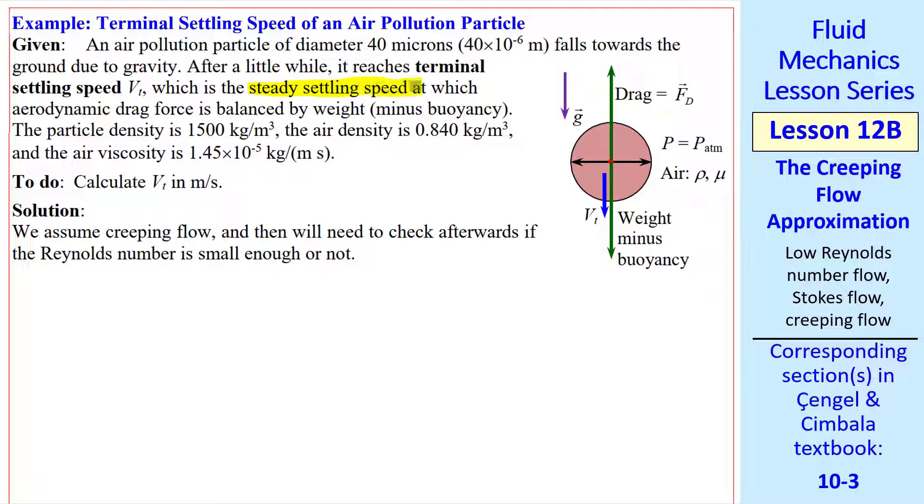The terminal settling speed is the steady settling speed at which aerodynamic drag force is balanced by weight, actually weight minus buoyancy. In this problem, I have a 40 micron sphere with this density and this air density and viscosity. This is an air pollution particle high up in the atmosphere, and I want to calculate VT.